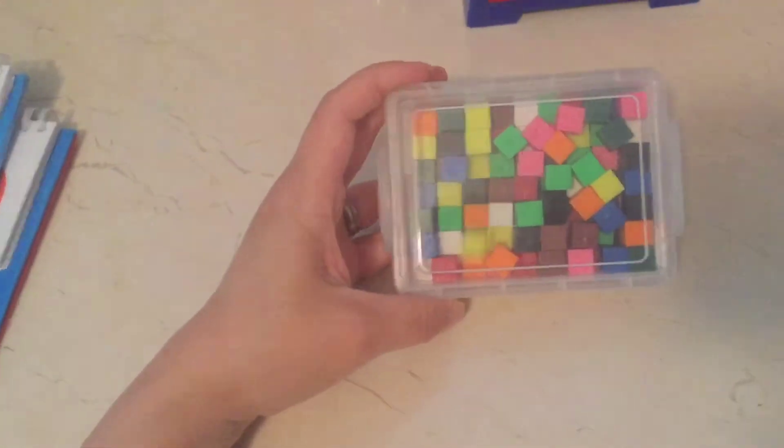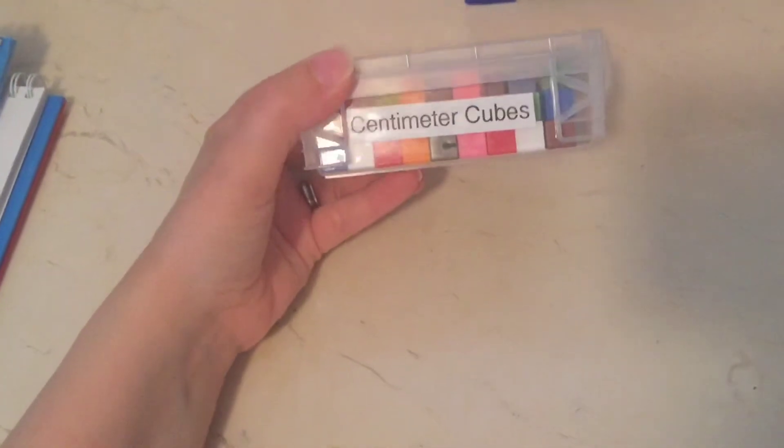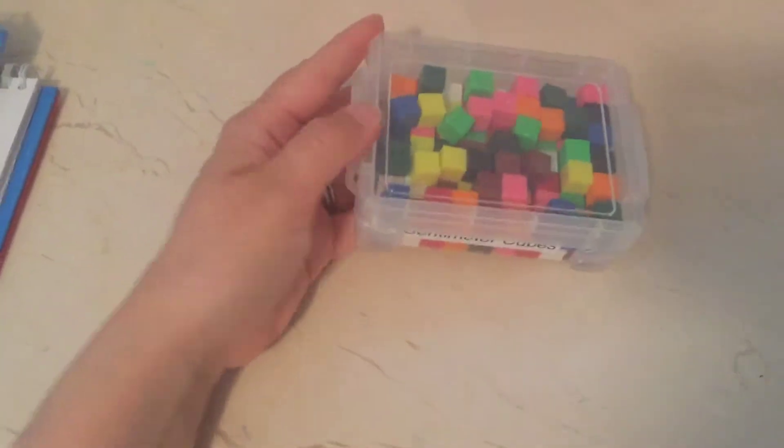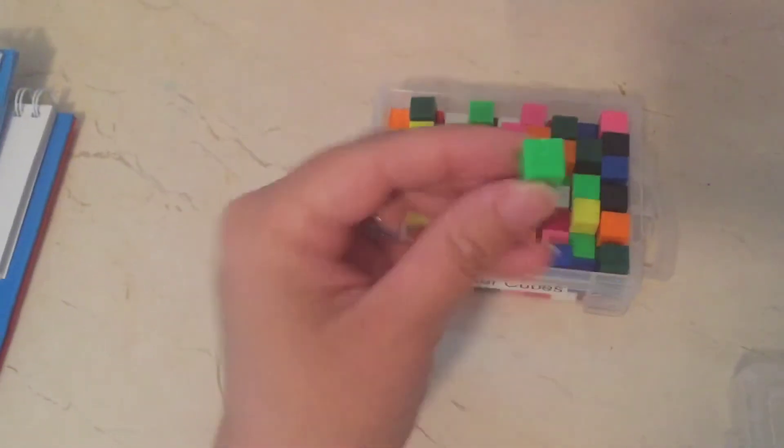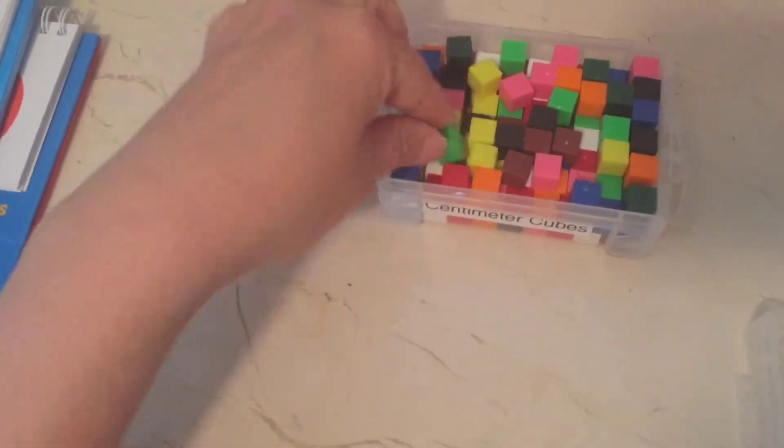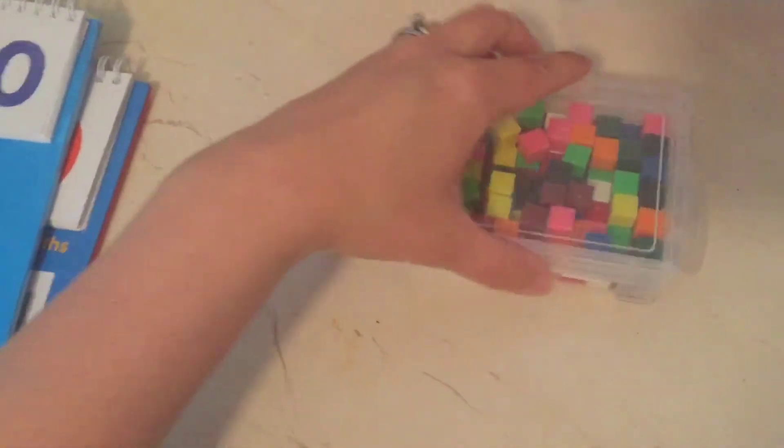So we picked up these centimeter cubes from Rainbow Resource. I originally got a package of only 20 but we ended up really liking them so I ordered the 100 package. It's just really good for pincer grasp for my little guy, they're colorful and they're nice manipulatives. They're hard plastic too so they're durable.